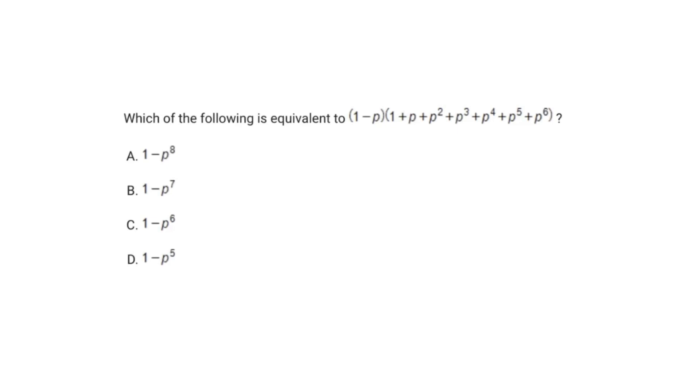So you can see here that all the answer choices have a coefficient of 1 in there. And that makes sense because 1 times 1 is just 1, and no other values will give you just a coefficient by itself. Everything else will be in terms of p.